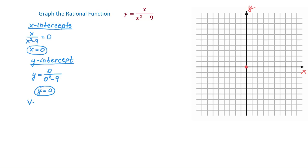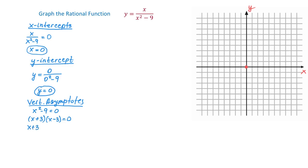Let's continue by finding any vertical asymptotes. To find any vertical asymptotes we have to set the denominator equal to 0. So x squared minus 9 equals 0. We can solve this equation by factoring: x squared minus 9 will factor as x plus 3 times x minus 3, all equals 0. A product is 0 if any of these factors are equal to 0. So x plus 3 could be 0, giving us x equals negative 3, or x minus 3 could be 0, giving us x equals positive 3.